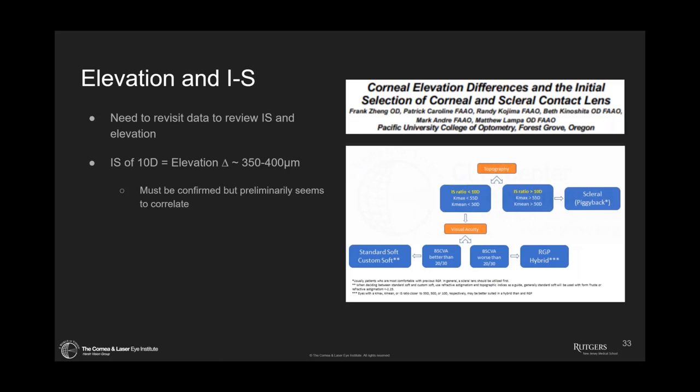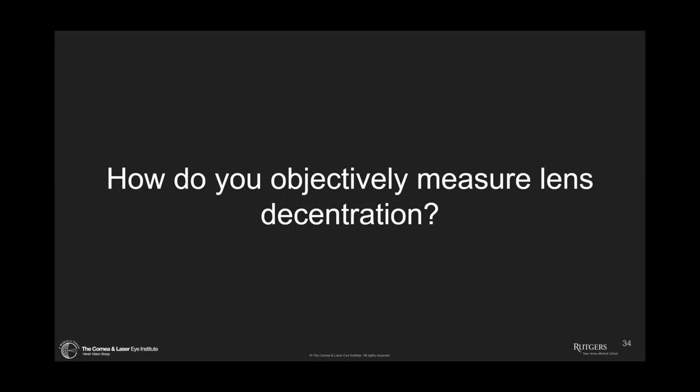When we compare this back to Frank Zeng's work, it's actually very similar. An IS ratio of 10 diopters equaled an elevation of about 350 to 400 microns, so we're basically saying the same thing. The preliminary analysis seems to correlate, making this a pretty good way to decide what lens you're going into.